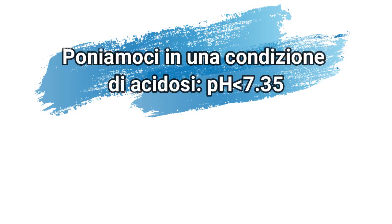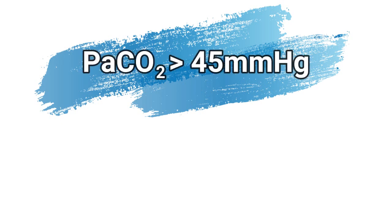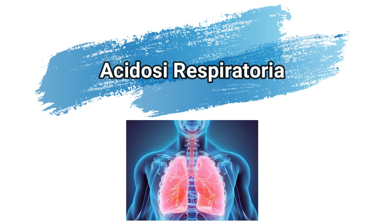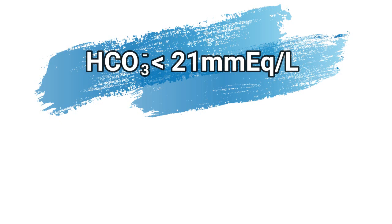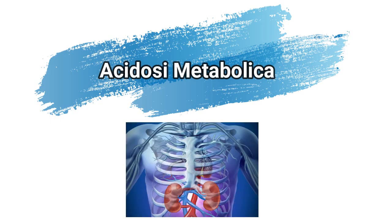Consideriamo ora una condizione di acidosi, ovvero con pH minore di 7,35. Se la pressione parziale di anidride carbonica è maggiore rispetto ai valori di riferimento, la persona assistita si trova in una condizione di acidosi respiratoria, che avviene quando una persona ipoventila trattenendo troppa CO2. Se ci troviamo ancora in acidosi e i bicarbonati sono minori rispetto ai valori di riferimento, la persona assistita si trova in una situazione di acidosi metabolica. Ciò avviene quando nell'organismo cala il livello di bicarbonato per via della presenza in maggiori quantità di sostanze come acido lattico e chetoni, o per la perdita di bicarbonato stesso.